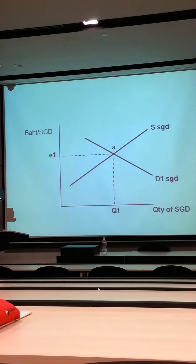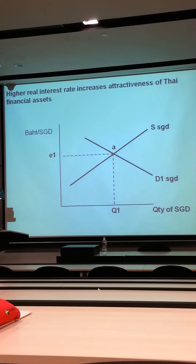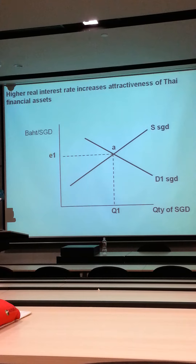Which means foreigners will buy more Thai financial assets, doesn't it? So which curve shifts? The supply curve shifts, because Singaporeans will buy more Thai financial assets. High interest rates increase the attractiveness of Thai financial assets — you must say that. When interest rates rise, the financial assets of the country become more attractive.